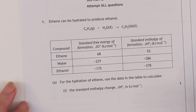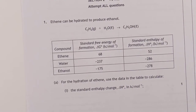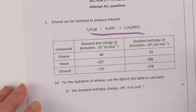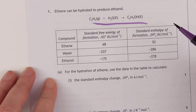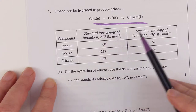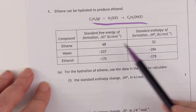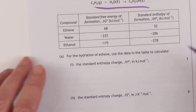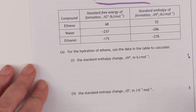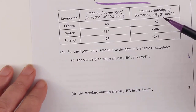Let's have a look at a classic calculation here. This is your classic one where they ask you to calculate a temperature where a reaction just becomes feasible. Here's the reaction — we're making ethanol; it's the hydration of ethene. We've got ΔG and ΔH values for the different compounds. For the hydration of ethene, use the data in the table to calculate the standard enthalpy change — one mark, so it should be relatively straightforward. That's simply the sum of all the enthalpy of formations of the products, take away the reactants.